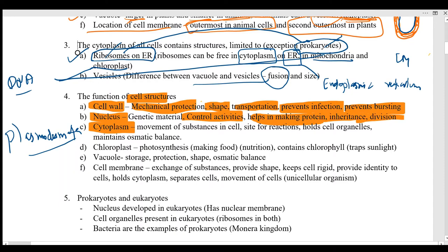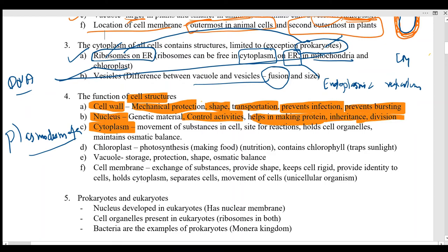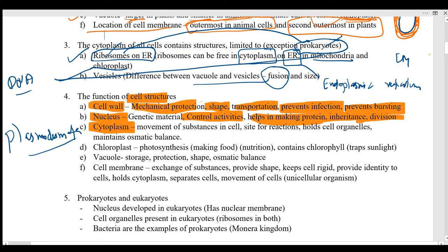The cytoplasm is where many substances are dissolved in water, and a lot of movement of various substances takes place. Substances found in the cytoplasm include glucose, fructose, amino acids, water, and enzymes — essentially a never-ending list. The cytoplasm is the site of many reactions, though not all — some reactions take place in different cell organelles.